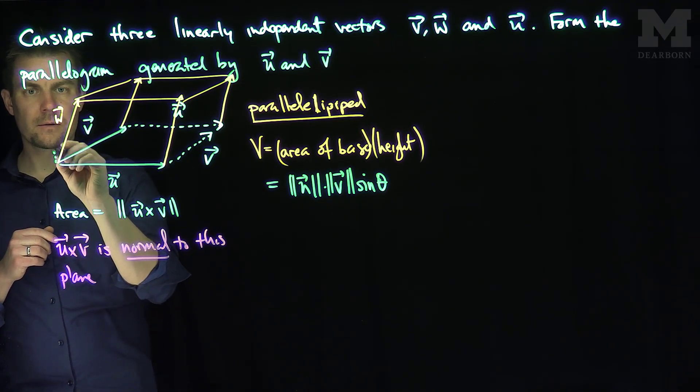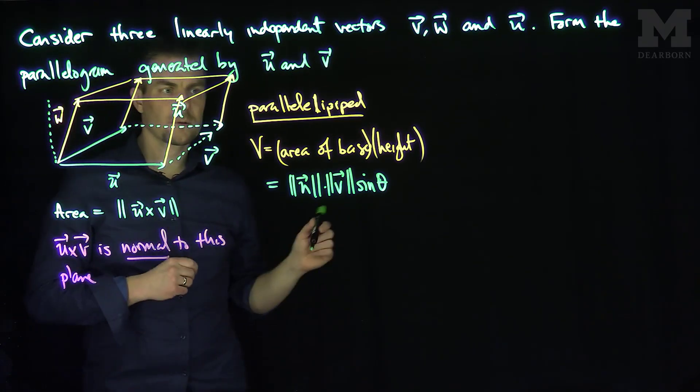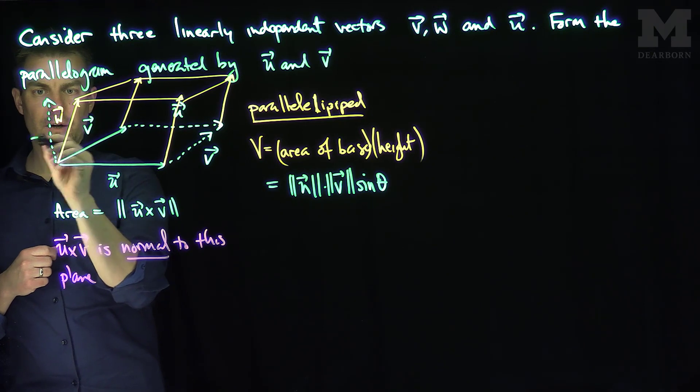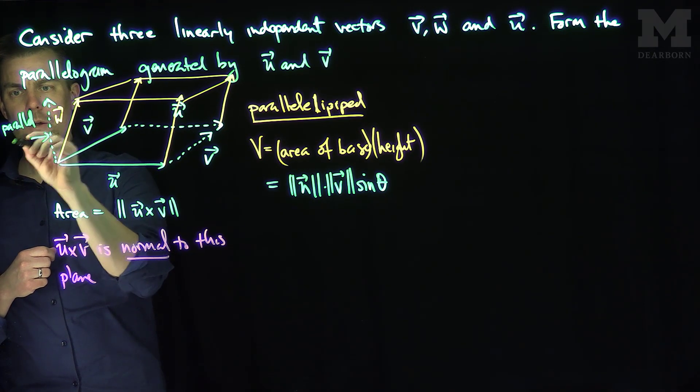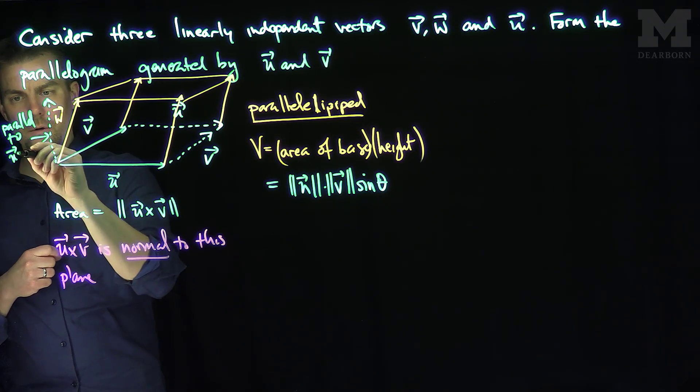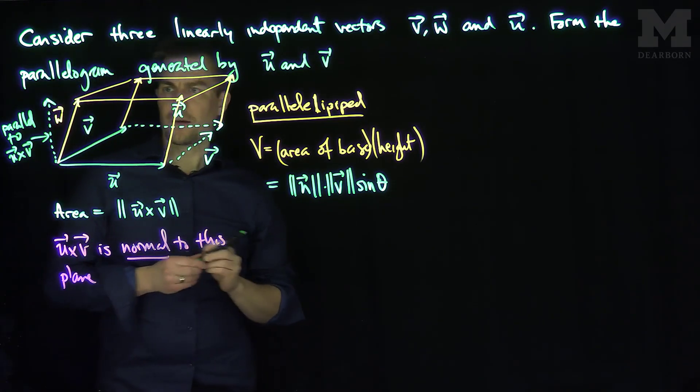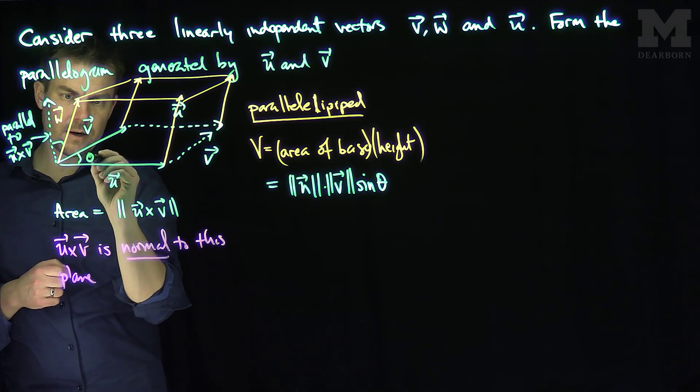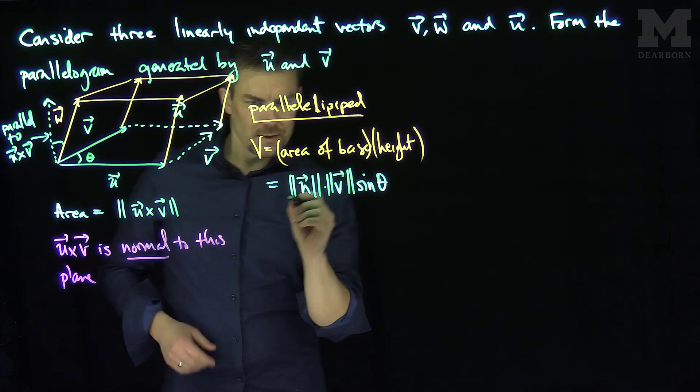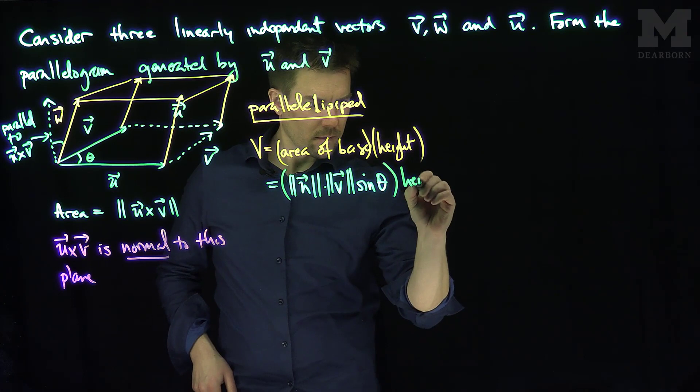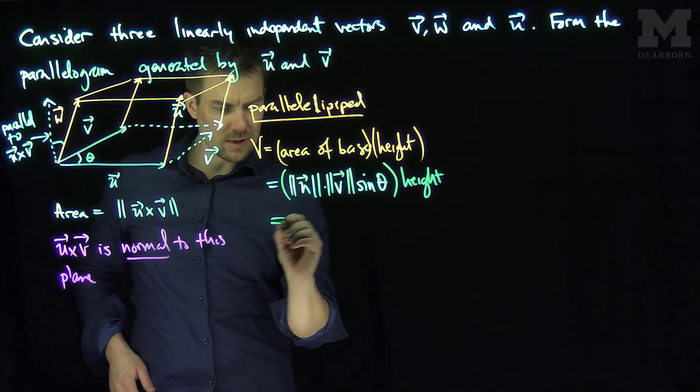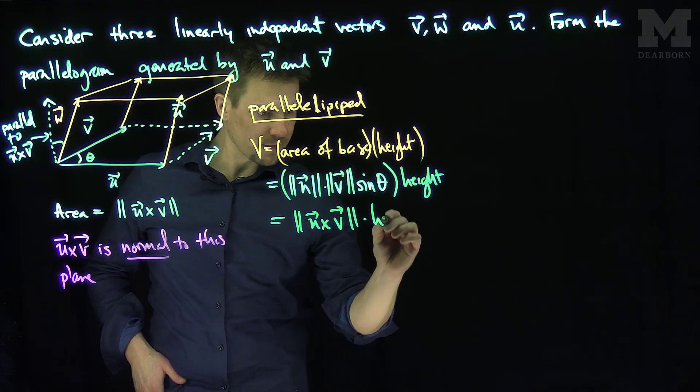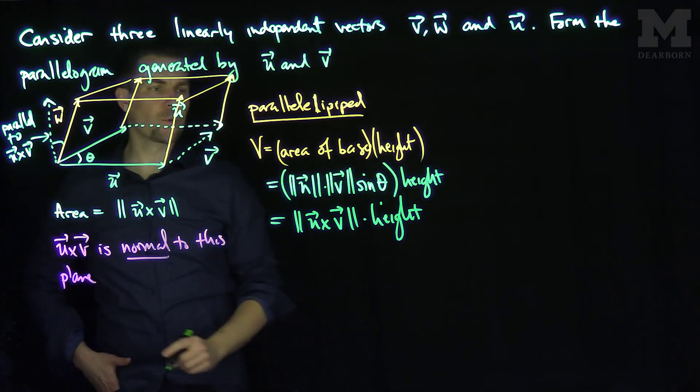And now let's look over here. Now I can draw the height. So what's the height? Well, this vector over here is parallel to u cross v. So that's one way we can represent the area of the base. But let's just leave it in this formula. Let's leave this as u cross v for the time being, times the height.